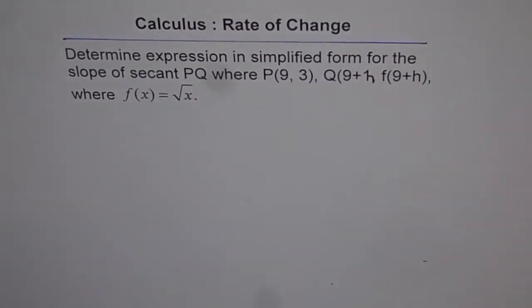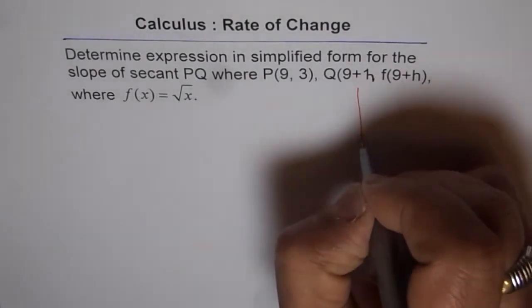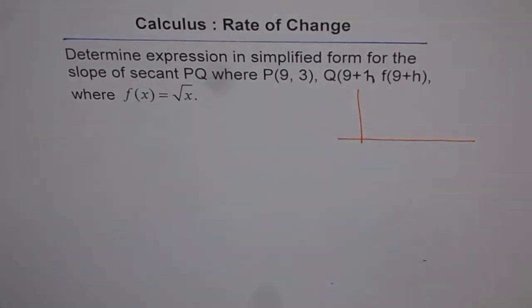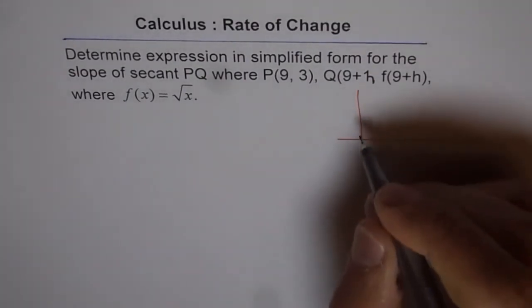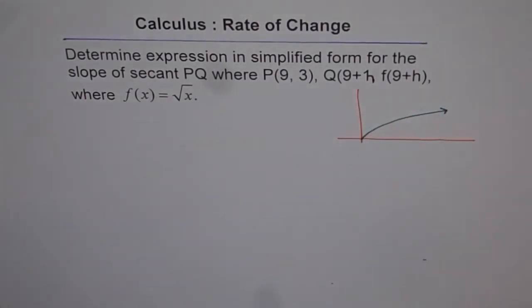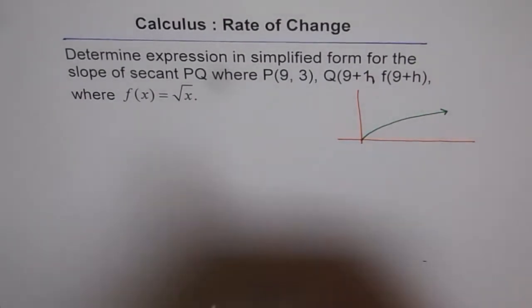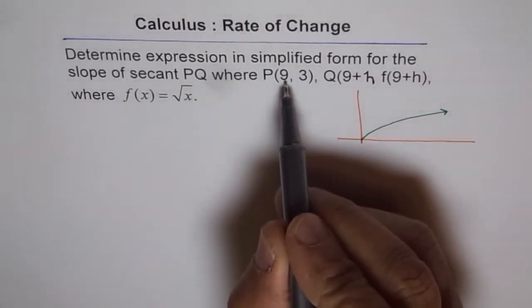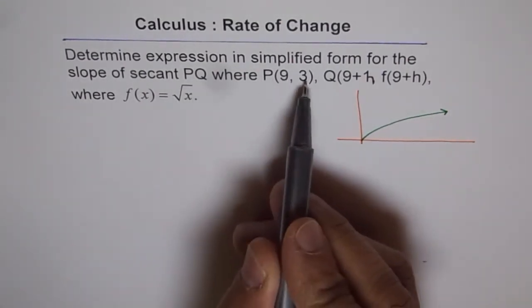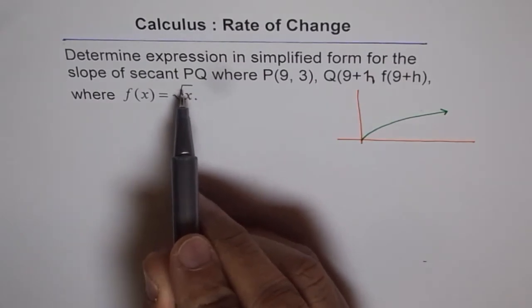To understand what points we're talking about, let me sketch this function and explore it further. Here is a small sketch for f(x) = √x — as you know, it looks like this. We are given two points. One point is P, which is at x = 9. The square root of 9 is 3, so the y-value is f(9) = 3.